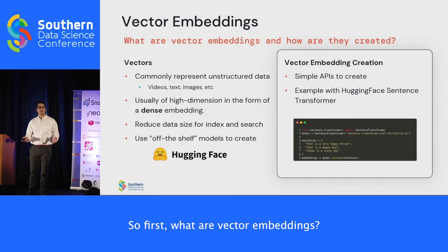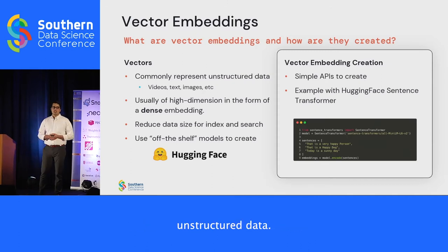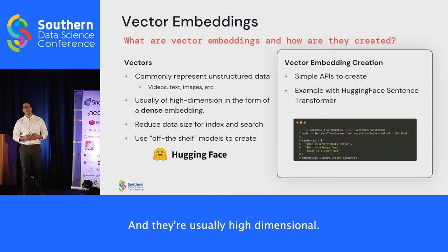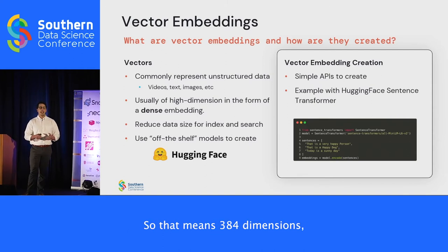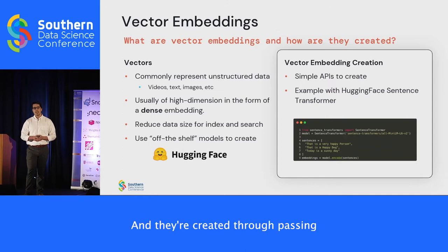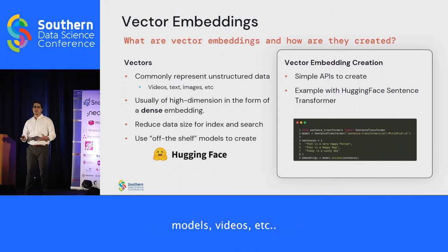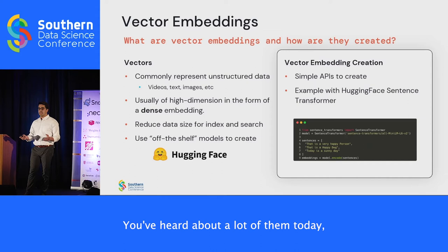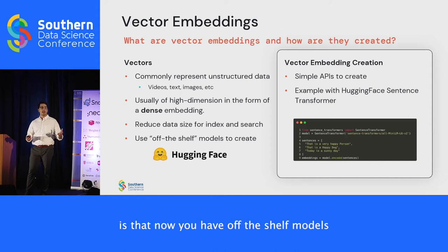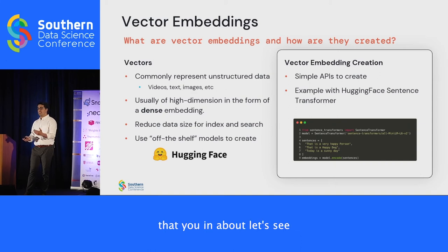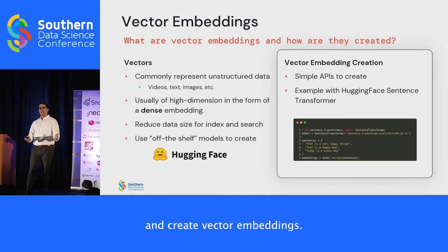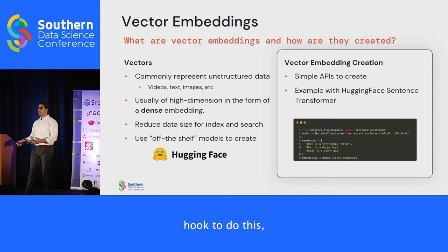What are vector embeddings? They commonly represent unstructured data — images, videos, text, audio. They're usually high-dimensional: 384 dimensions, 768 dimensions — and they're created by passing unstructured data through machine learning models, such as transformer models or VAEs. Now you have off-the-shelf models like Hugging Face transformers that in about nine lines of code can take unstructured data like text and create vector embeddings. I don't know who remembers having to create a custom PyTorch hook to do this, but it was much more painful.